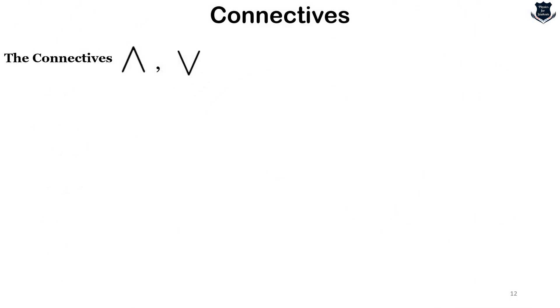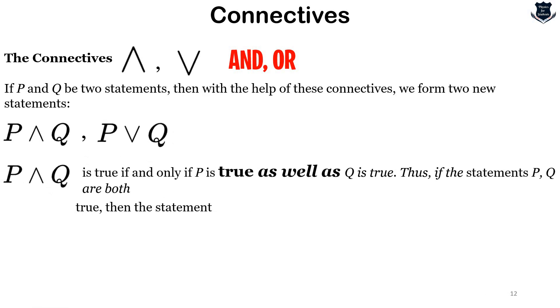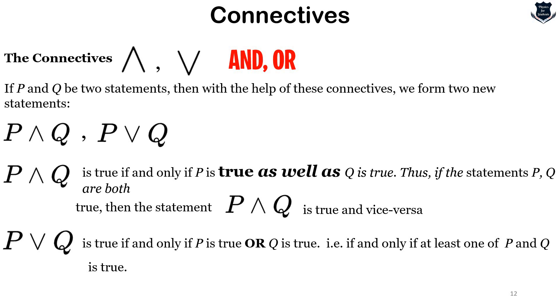Next we have the 'and' and 'or' symbols. If p and q are statements, with the help of these connectives we form new statements: p and q, or p or q. The statement 'p and q' is true if and only if p is true as well as q is true. The statement 'p or q' is true if and only if at least one of p and q is true.